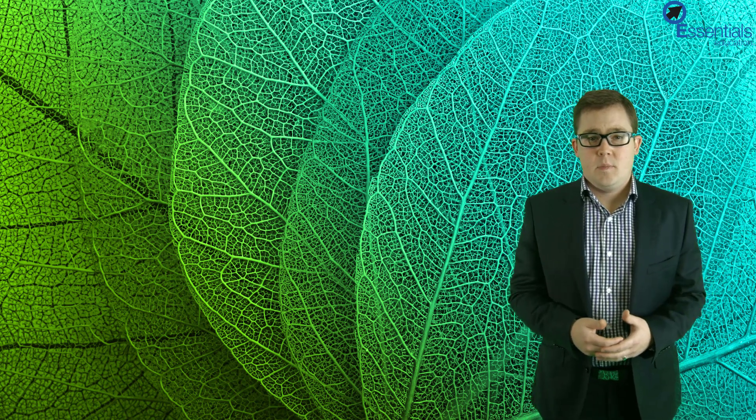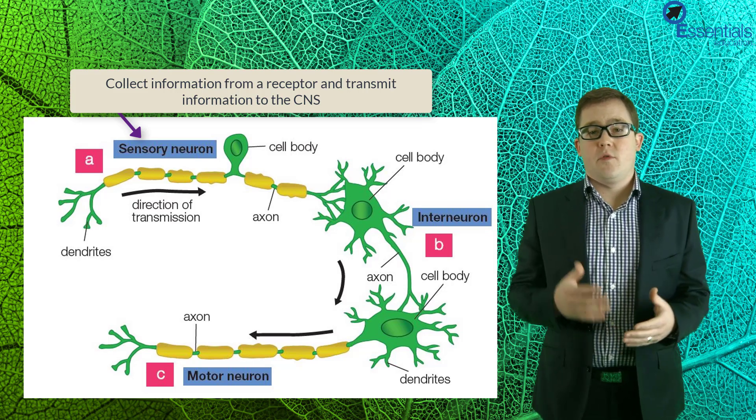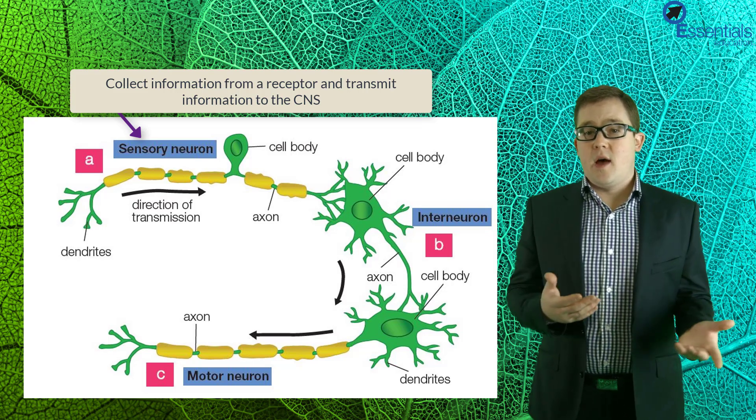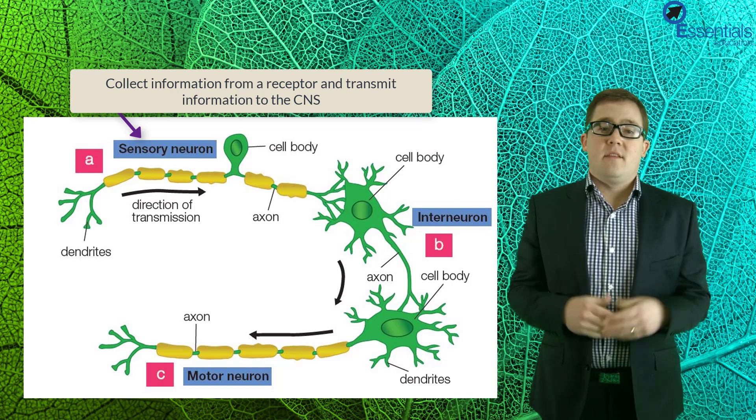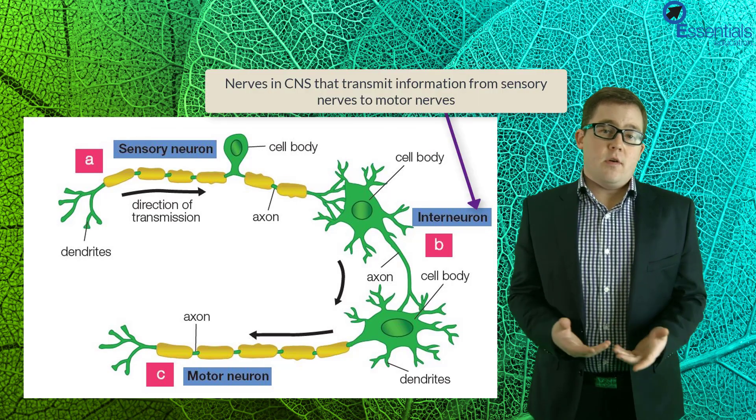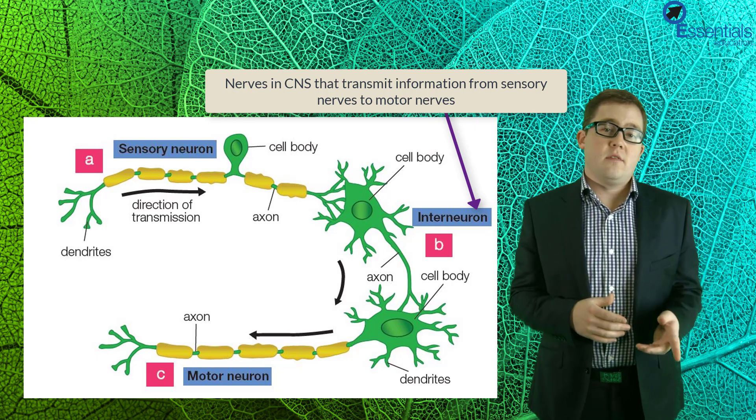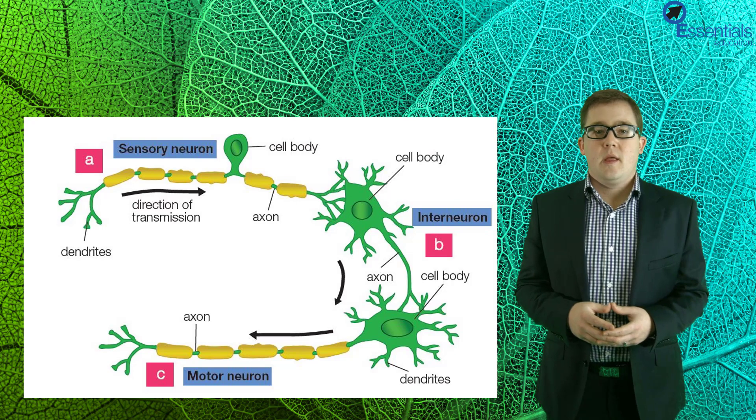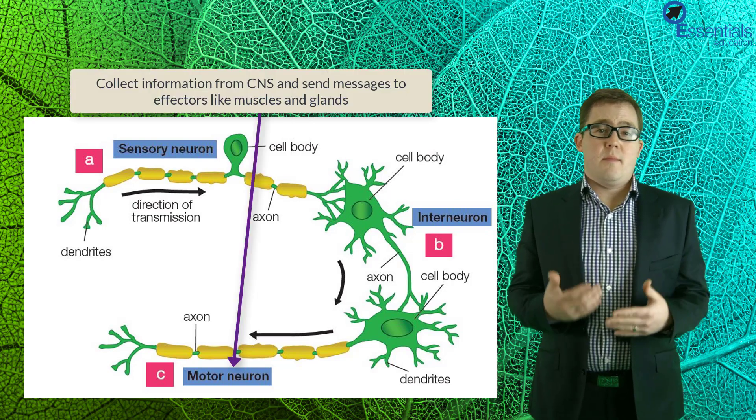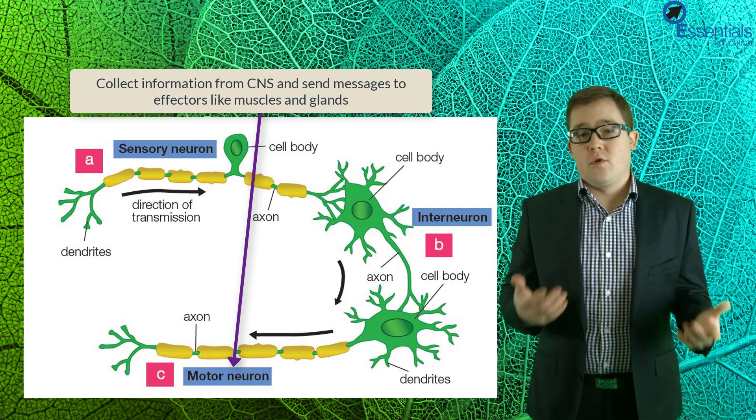Now this is the general structure of a nerve cell, but there are actually three different types of these cells and each has a different job to do. First we have sensory neurons which collect and transmit information from a receptor, say for example the light sensitive cells in your eyes, and send it to the central nervous system. We then have interneurons which are nerves in your central nervous system that transmit messages from your sensory nerves to your motor nerves. And finally we have motor nerves themselves which transmit messages from your central nervous system to effectors, which could be for example a muscle or a gland.